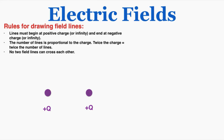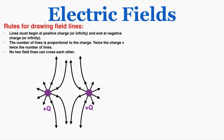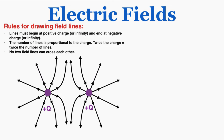For two equal positive charges, the field lines pointing toward each other curve away and go to infinity — they can't cross. A positive charge placed near the middle would be repelled by both charges and pushed upward or downward depending on its starting position. The other lines curve off toward infinity as well. These field lines are a visual approximation, not a perfectly precise measurement of paths — just make sure you follow the three rules when drawing them.